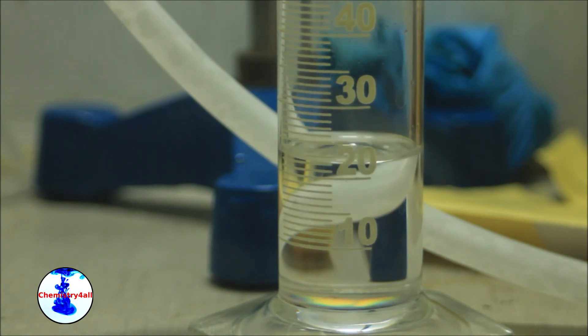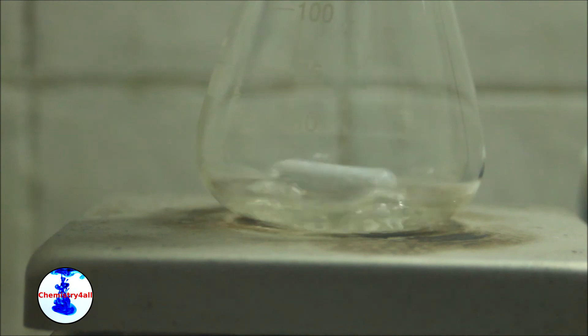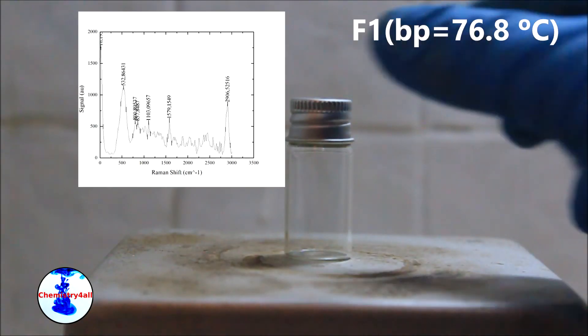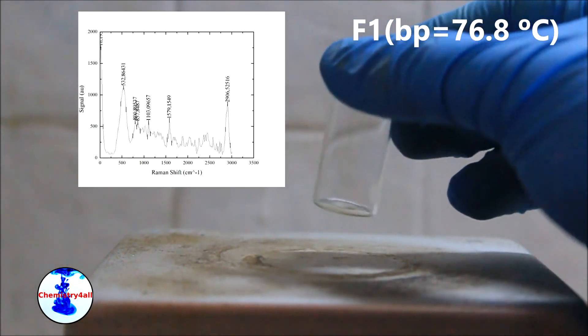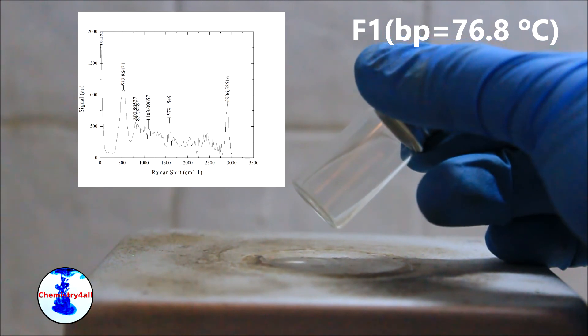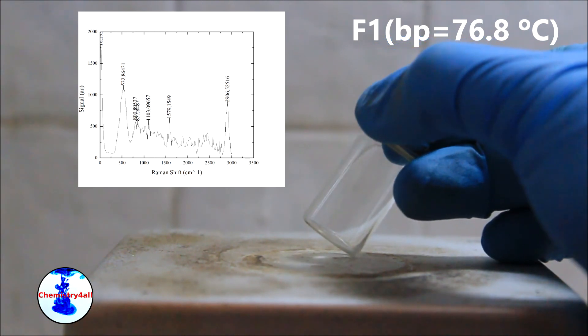This is the liquid residue left after the distillation, which contains higher boiling point impurities present in the original paint remover. Finally, I've collected a total of 6 different fractions. To each of them I've performed a Raman spectrum from which we can infer its composition.